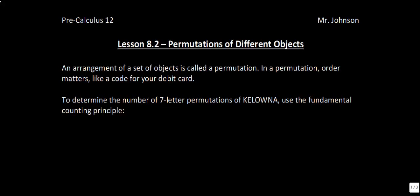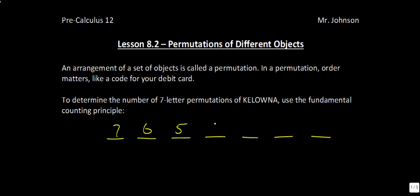Here's an example to get us started. To determine the number of seven letter permutations of Kelowna, we use the fundamental counting principle. The word Kelowna has seven letters, so there are seven different possibilities for the first letter, then six, then five, then four, then three, then two, then one — because each letter used reduces the remaining choices. Multiplying all these together gives us 5040.